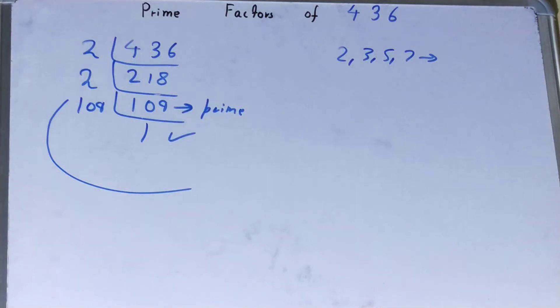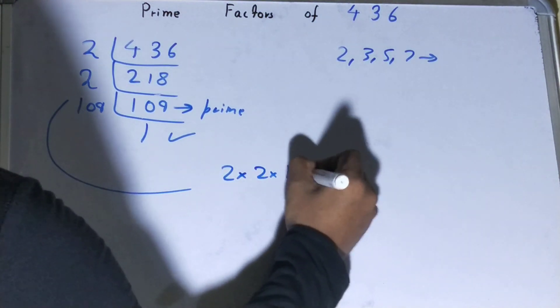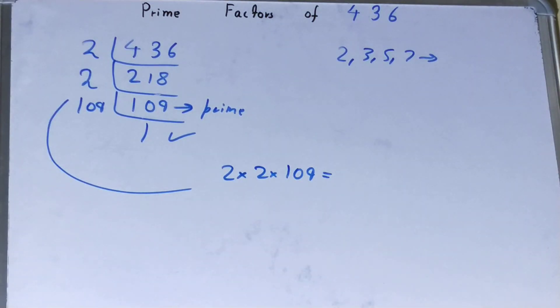Whatever you have on the left-hand side will be the set of prime factors for the number 436: that is 2 × 2 × 109. If you want to check whether it is right or not, you can multiply them, and if on multiplying you have the number back again, that means your calculation is correct.